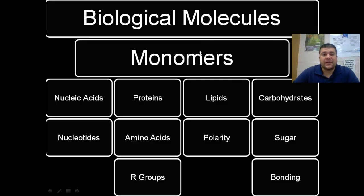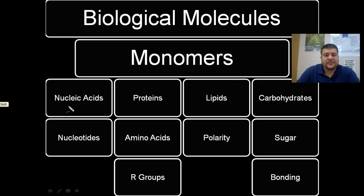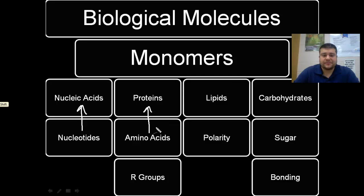They're made up of things called monomers — the smaller subunits of these biological molecules. When we have something like a nucleic acid, the smaller pieces that make up nucleic acids are called nucleotides. If you chain a bunch of these together, you get nucleic acids. The amino acids make up proteins, and the different amino acids have different R groups. If you chain a bunch of amino acids together, you make up a protein.